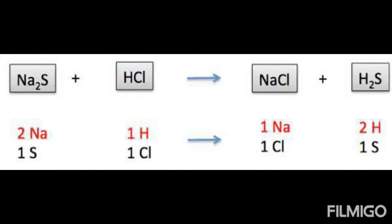As you can see, Na2S plus HCl gives NaCl plus H2S. In Na2S there are two sodium atoms and one sulfur. In HCl there is one hydrogen and one chlorine. The two sodium atoms combine with chlorine to form NaCl, and the hydrogen combines with sulfur to form H2S. Both sets of the reaction are balanced.